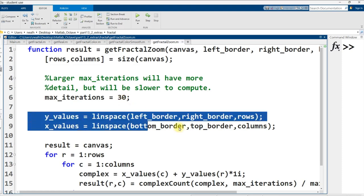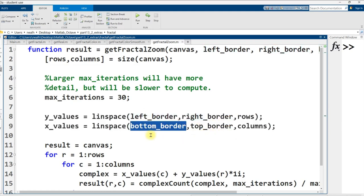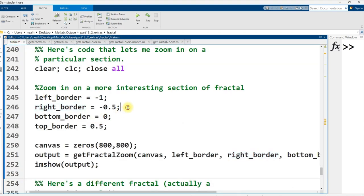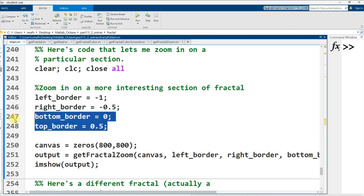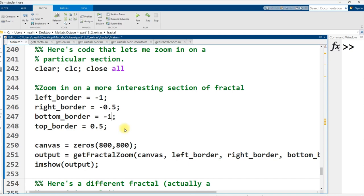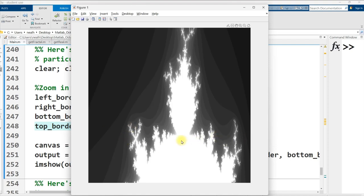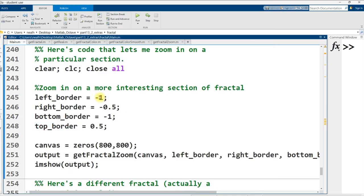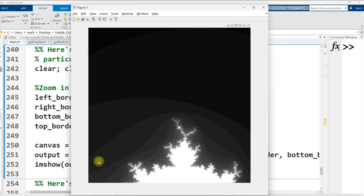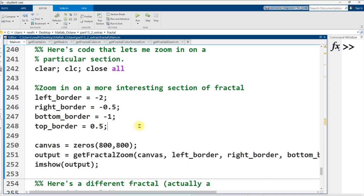Let's look at getFractalZoom. A lot of the difference in the calculation has to go right in here, where I generate the x and y coordinates. Instead of just going from negative two to two, I go from left border to right border and from bottom border to top border. I will just make one note: this right here is a range of 0.5, and this is also a range of 0.5. I don't think it looks as good to use a different distance on one axis compared to the other. That's just some details on that.